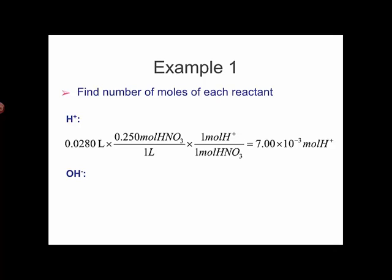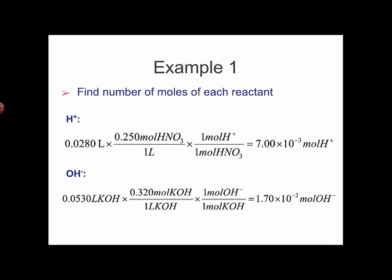We can do the same thing with the base. Volume times molarity. KOH produces 1 mole of OH- per mole of KOH. Now, if we were using something like calcium hydroxide, Ca(OH)2, then that third conversion there would be 2 moles of OH- per mole of Ca(OH)2. And so we'd have to double our moles of hydroxide for each mole of the salt that dissolved.